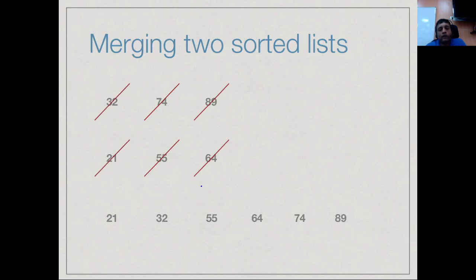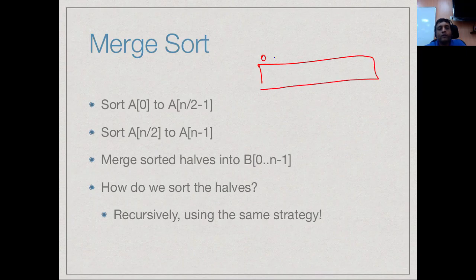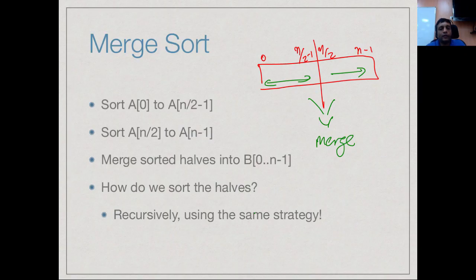Now how do we use this to sort? Our aim is to break the problem into two equal sub-problems, solve them, and then merge the two solutions into a final solution. We sort A[0] to A[n/2 - 1] separately and A[n/2] to A[n-1] separately, then merge them. Since the final step involves merging two solutions, this is quite naturally called merge sort.